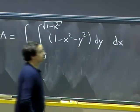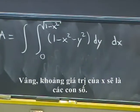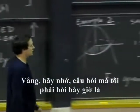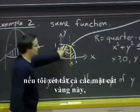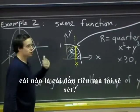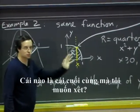What about the range for x? Well, the range for x should just be numbers. Remember, the question I have to ask now is, if I look at all of these yellow slices, which one is the first one that I want to consider, which one is the last one that I want to consider?